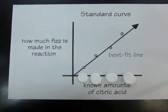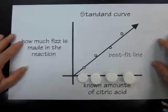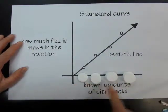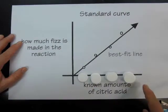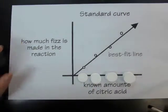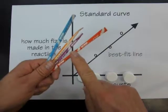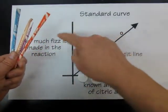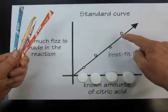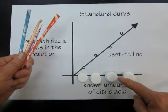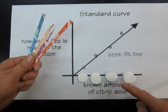So that's our overall strategy. It's called comparison to a standard curve. A standard is something that you know, and what we know is how much citric acid is in each of these reactions. We don't know how much citric acid is in the Pixie Stix, but if we know how much fizz they make, we can use the plotted relationship to find out how much citric acid it took to make the amount of fizz that we measured.